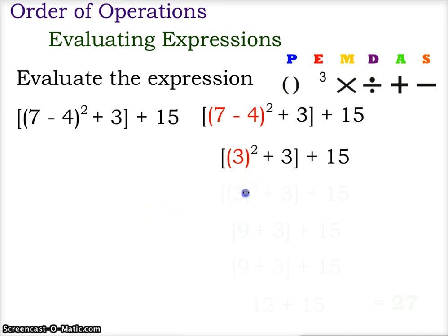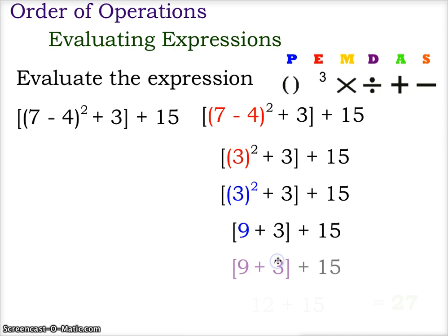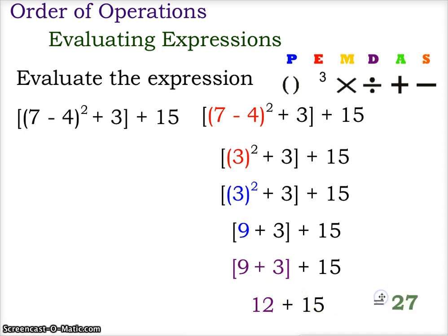Next we do exponents — 3 squared is 9. So now we have 9 plus 3 in brackets, plus 15. We do the grouping symbol next: 9 plus 3 gives us 12, which we finally add to the 15, giving us a value of 27.